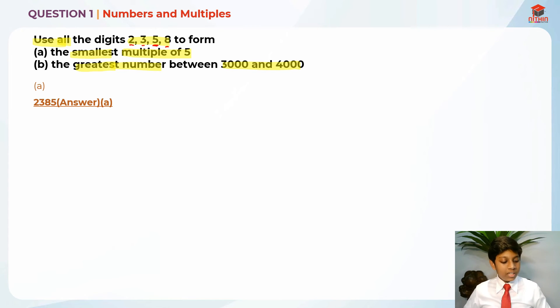The greatest number between 3,000 and 4,000. Which number among them is between 3,000 and 4,000? Let me erase these things.